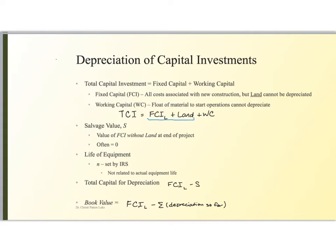So this is the total amount that we have for fixed capital. And then there's also going to be some working capital. This is how much money I need to have on hand so that I can pay employees, buy raw materials, buy lab supplies, etc.